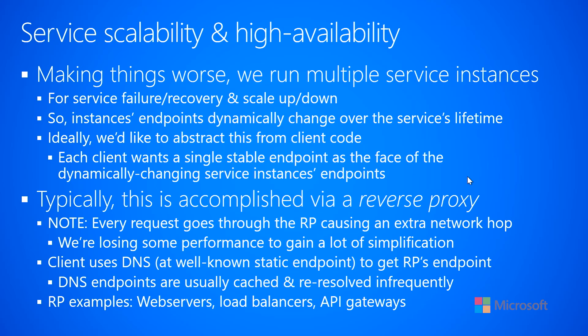In this case, the client uses some kind of domain name service — DNS — which has to be at a well-known static endpoint, in order to get the reverse proxy's endpoint. The DNS endpoints are usually cached in the client and re-resolved infrequently, but it's possible the reverse proxy could move around too, requiring re-resolution to find its new location. There are many examples of reverse proxies, such as web servers like NGINX or Microsoft's Internet Information Server, load balancers, and API gateways.